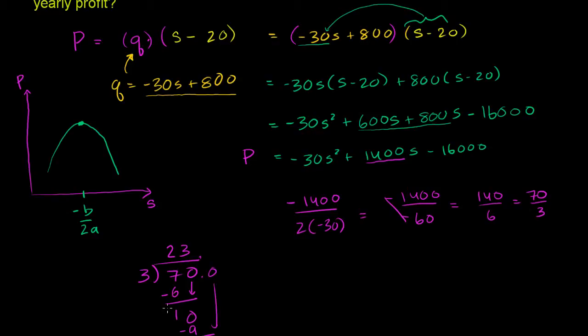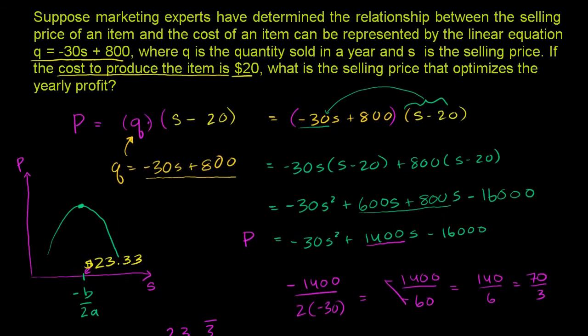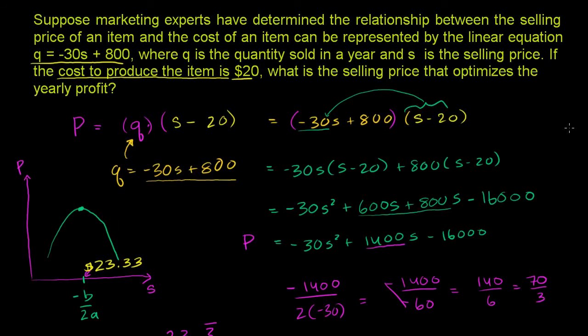It becomes a 10 again. 3 goes into 10 3 times. I think you see where this is going. It's 23.3 repeating times. It'll just, if we just keep doing this, we're just getting more and more threes. Or if we just wanted to round to the nearest penny, since we're talking about selling something, this optimal profit will happen at a selling price of $23.33. That will optimize the yearly profit.